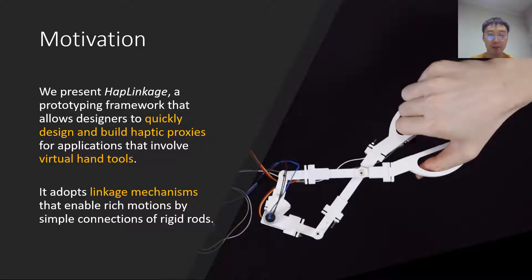Therefore, we present HapLinkage, a prototyping framework that allows designers to quickly design and build haptic proxies for applications that involve virtual hand tools. It adopts linkage mechanisms that enable rich motions by simple connections of rigid rods.